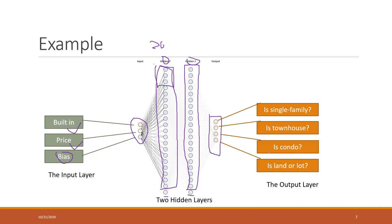For the output layer we have four units, because in our dataset there are four types of houses: single family home, townhouse, condo, and land alone. The four units correspond to the probability of that house being each of those house types.